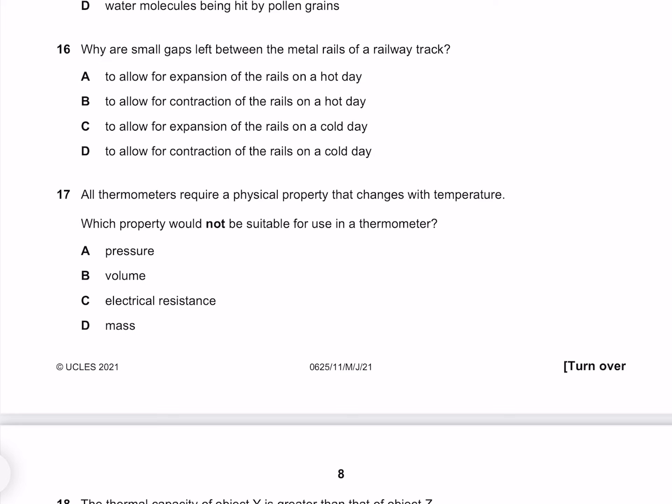Why are small gaps left between the metal rails of a railway track? On a hot day our metal rails are going to expand, which is the reason we have these small gaps. If the gaps weren't there then our tracks might buckle, so the answer is A. B is not correct because on a hot day we would not expect contraction. C is wrong because on a cold day we would not expect expansion. And although on a cold day we would expect contraction, this doesn't explain the need to have gaps.